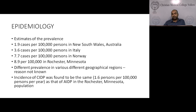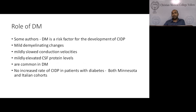The incidence of CIDP was found to be the same in both the Italian and Minnesota cohorts, and equal to the incidence of AIDP. Regarding the role of diabetes: it is a controversial topic. Some authors consider diabetes a risk factor for CIDP, because there are mild demyelinating changes in diabetes, mild slowing of conduction velocities, and mildly elevated CSF proteins. However, both cohorts showed no increased rate of CIDP in diabetic patients, and this association is by chance.